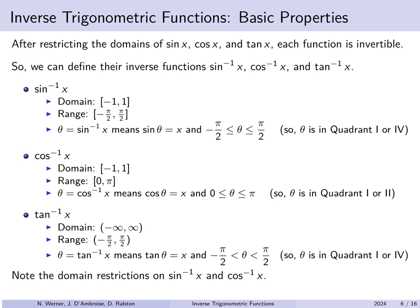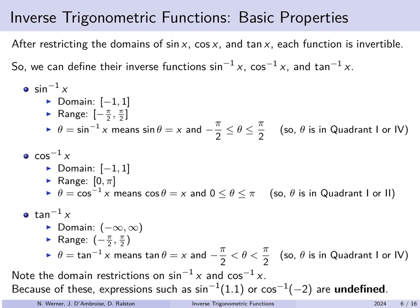It's worth pointing out the domain restrictions on arc sine and arc cosine — their domains are from minus 1 to 1. You cannot plug 1.1 or negative 2 into an arc sine or arc cosine function. The arc sine of 1.1 would be asking what angle in quadrant 1 or 4 has a sine of 1.1 — there are no such angles, since sine can never be larger than 1. Similarly, arc cosine of minus 2 asks for an angle in quadrant 1 or 2 whose cosine is negative 2, and there are no such angles.